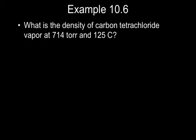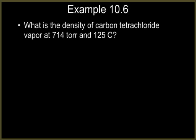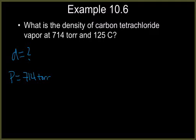Let's look at an example of how we could apply this. This question says, what is the density of carbon tetrachloride vapor at 714 torr and 125 degrees Celsius? We're going to make a list of the information we have here. I'm solving for density, so I'll put a question mark there. I have a pressure of 714 torr, which we're going to have to change to atm, and a temperature of 125 degrees Celsius, which I will have to change to Kelvin.